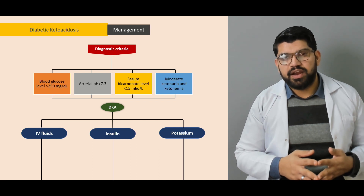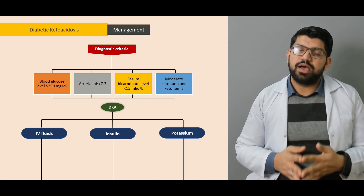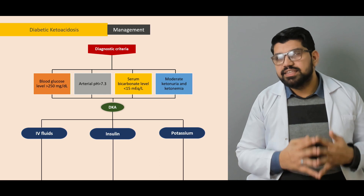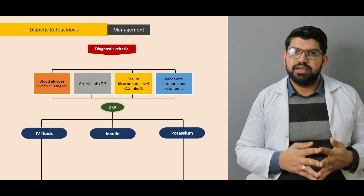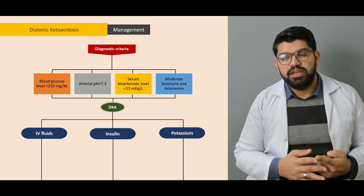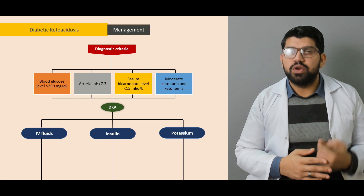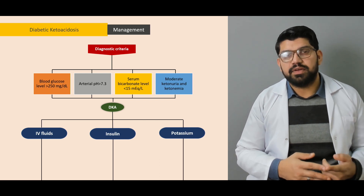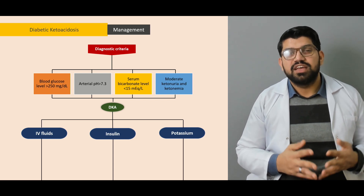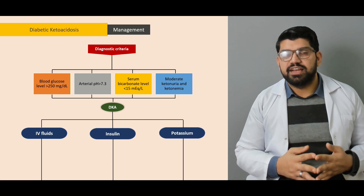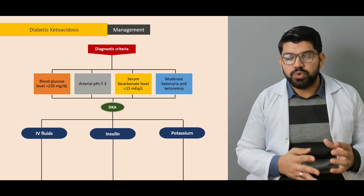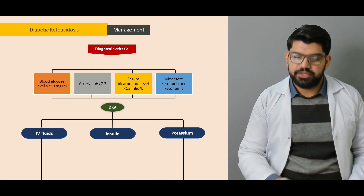Regarding potassium: acidosis causes potassium to come out of the cell, causing apparent hyperkalemia, but there is intracellular hypokalemia. If a patient with DKA already has low potassium, insulin may cause a further decrease by shifting potassium into cells, leading to fatal arrhythmias and fatal outcomes. So potassium needs to be regulated, treated, and controlled within a certain range in diabetic ketoacidosis.